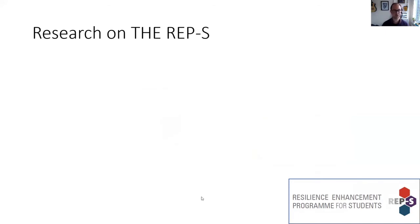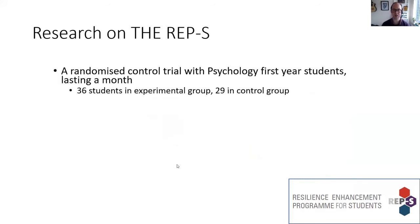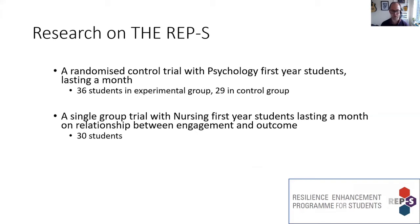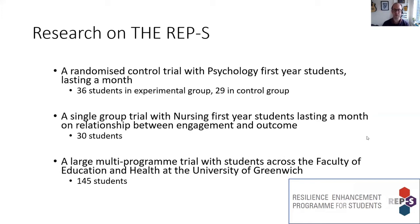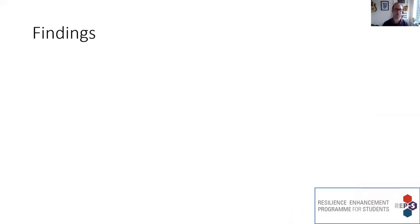In terms of research, we've done three structured pieces of research and are currently doing another. The ones completed are: a randomized control trial with psychology first-year students lasting a month; a single-group trial with nursing first-year students lasting a month, looking at the relationship between engagement with the intervention — how much they actually practice the techniques — and the eventual outcome; and a larger study based on students across a variety of degree programmes within the Faculty of Education and Health at the University of Greenwich, with 145 students, yielding principally qualitative data.